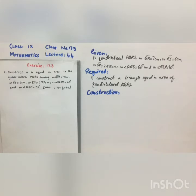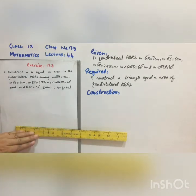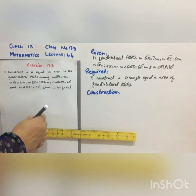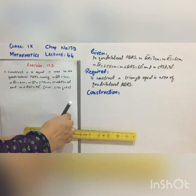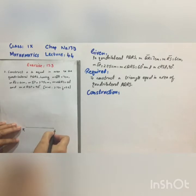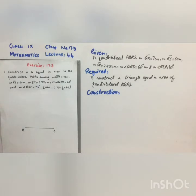Now we are given the angles at R and S, so we will first of all take the line segment RS which is 6 centimeters. Take the line RS, 6 centimeters. Now we will make an angle of 90 degrees at S because measurement of angle RSP is equal to 90 degrees.